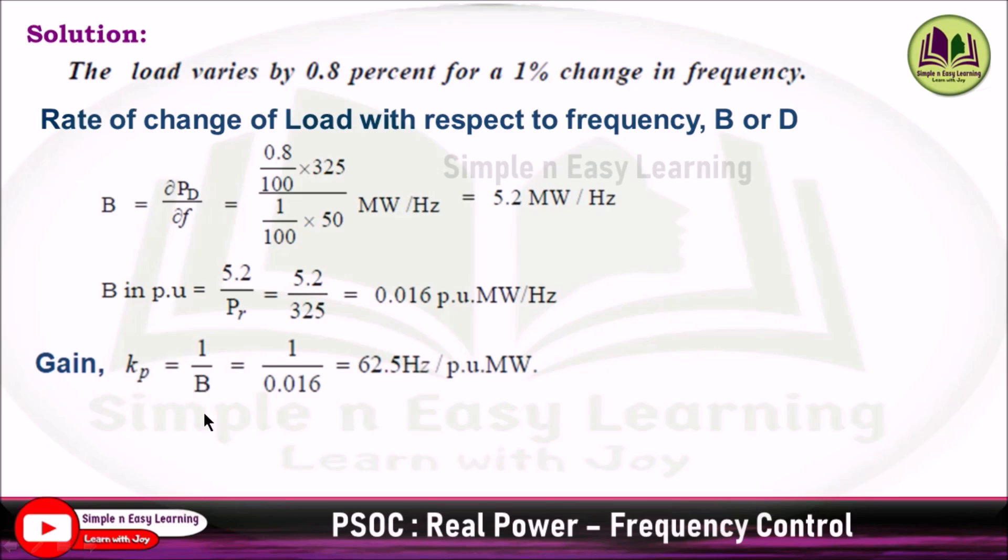Gain Kp equals the inverse of B, which is 1 divided by 0.016, equal to 62.5 hertz per per unit megawatt. Time constant Tp equals 2H divided by Bf₀, so 2 times H is 5 divided by B is 0.016 per unit times frequency 50, that gives you 12.5 seconds.